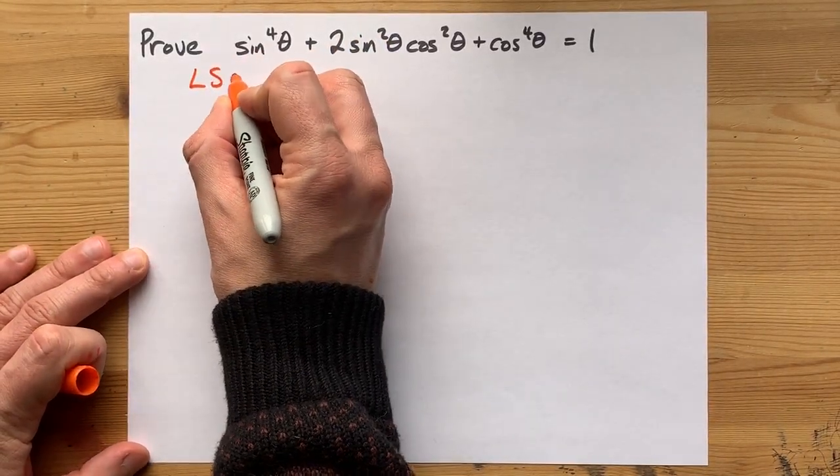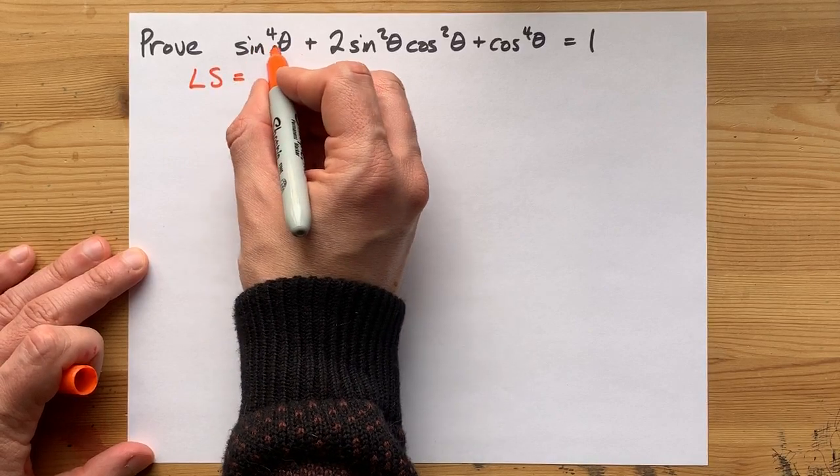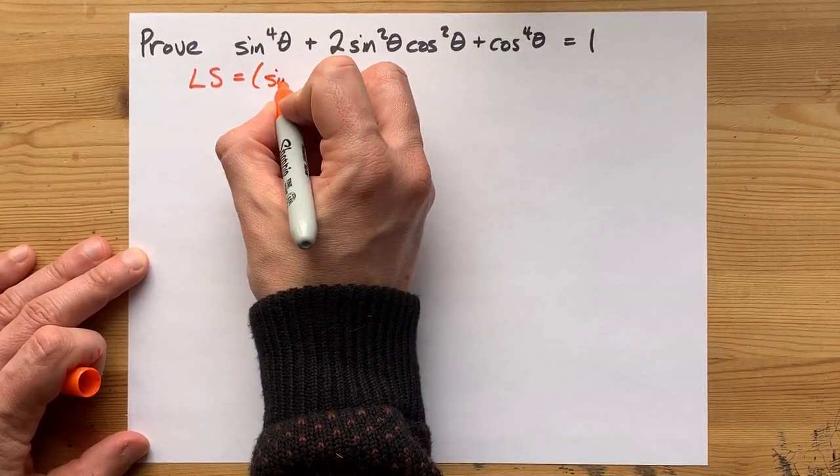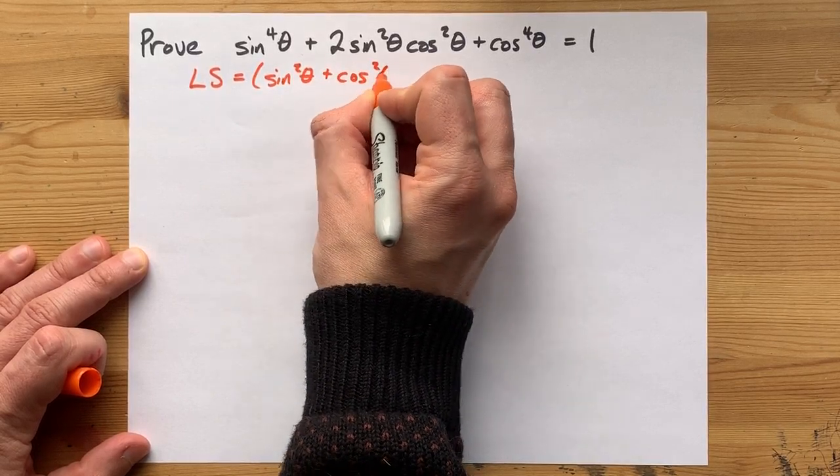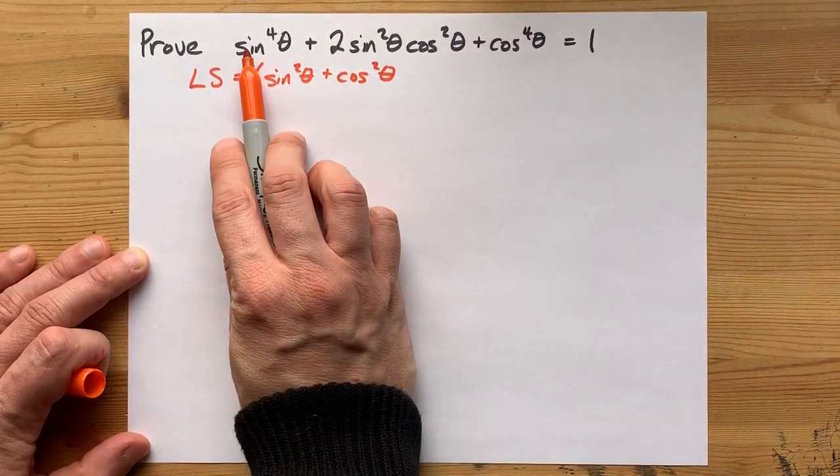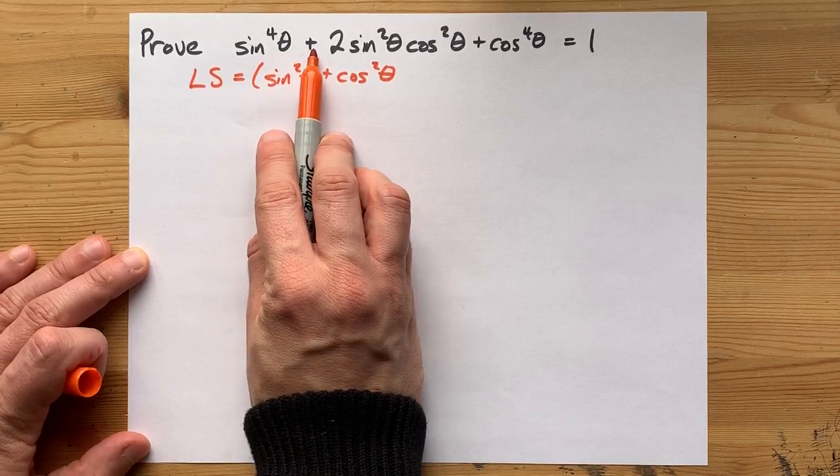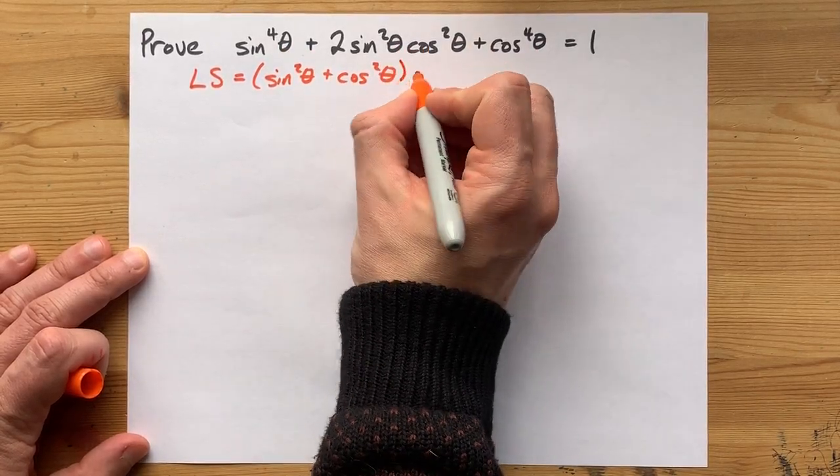So the shortest solution here is for you to simply rewrite that this is (sin²θ + cos²θ)². That's the square root of this plus the square root of that all squared.